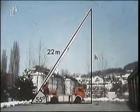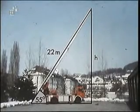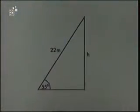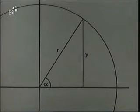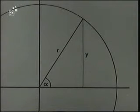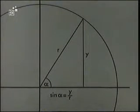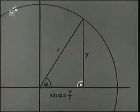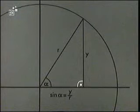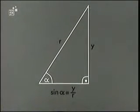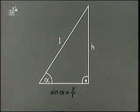Damit erhalten wir ein rechtwinkliges Dreieck, in dem wir eine Seite und einen Winkel kennen. Wir suchen also eine Beziehung zwischen Seitenlängen und Winkeln. Diese Beziehung hatten wir bereits in der ersten Sendung gesucht und auch gefunden. Als Beziehung zwischen Strecken und Winkeln hatten wir definiert: Sinus Alpha gleich Y durch R. Die Größen Alpha, Y und R bildeten ein rechtwinkliges Dreieck. Diese Beziehung gilt also auch im rechtwinkligen Dreieck. In unserem Dreieck werden die entsprechenden Seiten nicht Y, sondern H und statt R L genannt. Für dieses Dreieck gilt also: Sinus Alpha gleich H durch L.